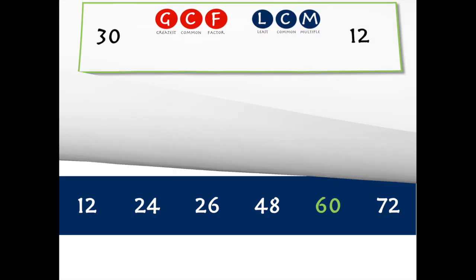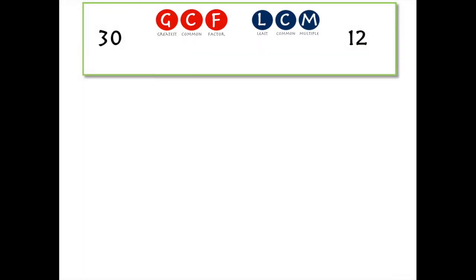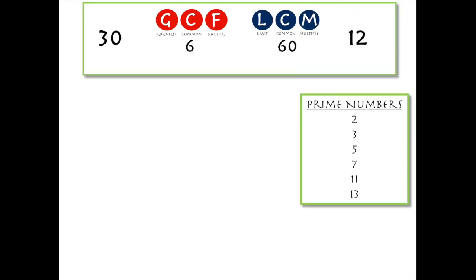Now let's check out a way to do both at the same time using 30 and 12. We just found the GCF to be 6 and the LCM to be 60 — remember that. First, we bring in a list of prime numbers as a reference, since we only want to try prime numbers as factors. Then we write down 30 and 12 and draw a line — this is the first rung of our ladder or first tier of our cake.